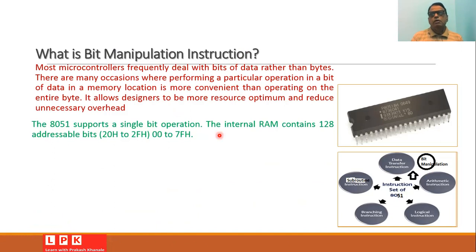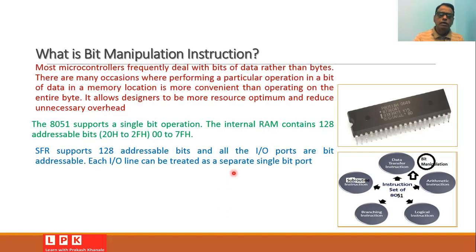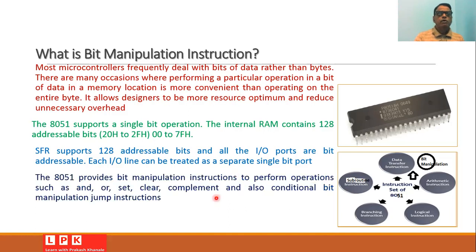We can manipulate the bits of the random access memory of the 8051. We also have special function registers, and these registers support 128 addressable bits. There are also I/O ports, and each I/O port line can perform a bit operation — that is, each I/O line can be treated as a separate single-bit port, so you can manipulate each I/O line individually.